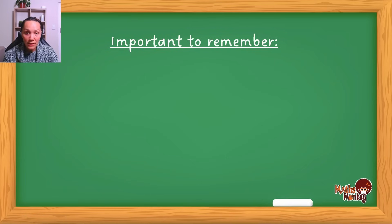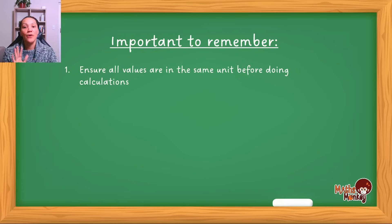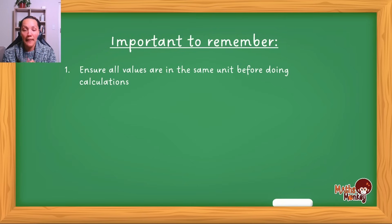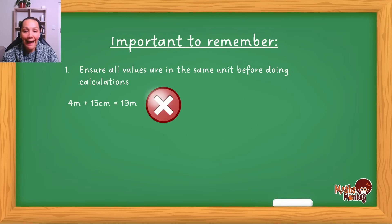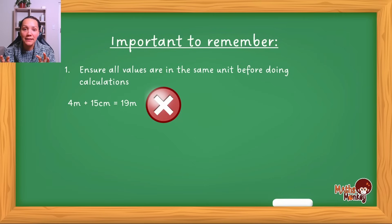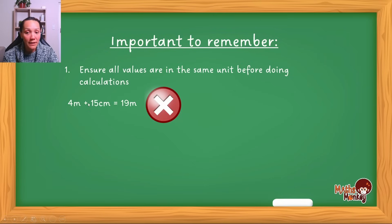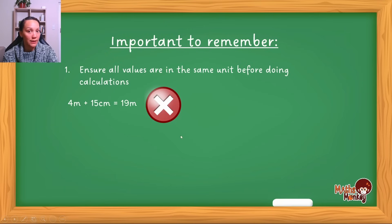Now, important things to remember before you even attempt any questions on this. The first thing is you have to ensure that whenever you are doing calculations, you are doing calculations with the same units. You can't add meters to centimeters. You have to first convert them both to either centimeters or meters and then find the answer. So 4 meters plus 15 centimeters is not equal to 19 meters, because these two units are not the same.